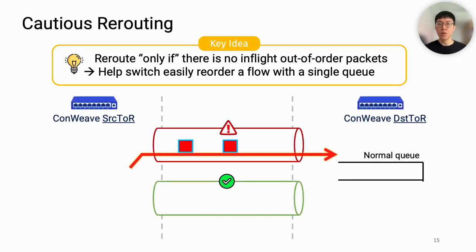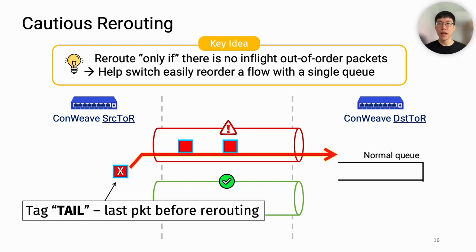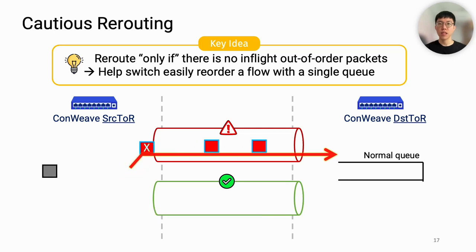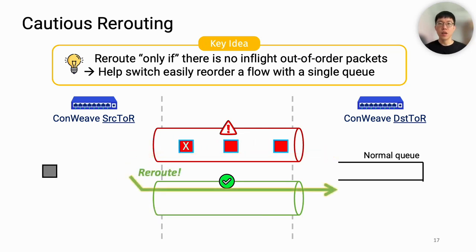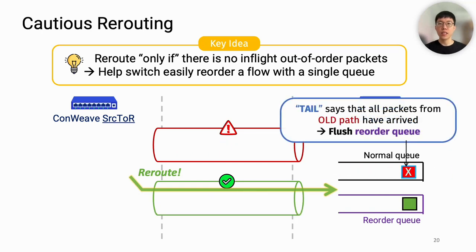Here is an example. Suppose there are two paths between a pair of ToR switches, and the current path is congested, so we want to reroute. When the next packet comes in, we tag it TAIL, indicating it is the last packet before rerouting. After sending, we perform rerouting, and for the next incoming packet, we send it to the new path. If packets arrive out of order, we dynamically assign a queue and buffer the packets. When the destination receives the TAIL packet, it implies that all packets before rerouting have arrived, so we flush the reorder queue.